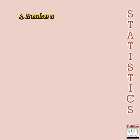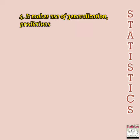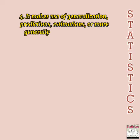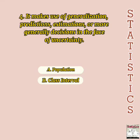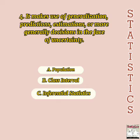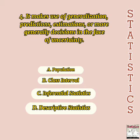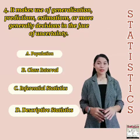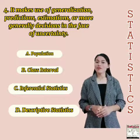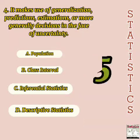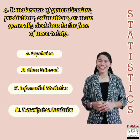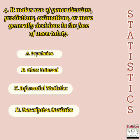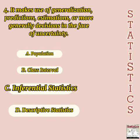And for our last question, question number 4: It makes use of generalizations, predictions, estimations, or more generally decisions in the face of uncertainty. A. Population. B. Class interval. C. Inferential statistics. D. Descriptive statistics. What do you think would be the possible answer? Amazing! You get it right! The correct answer is letter C, Inferential statistics.